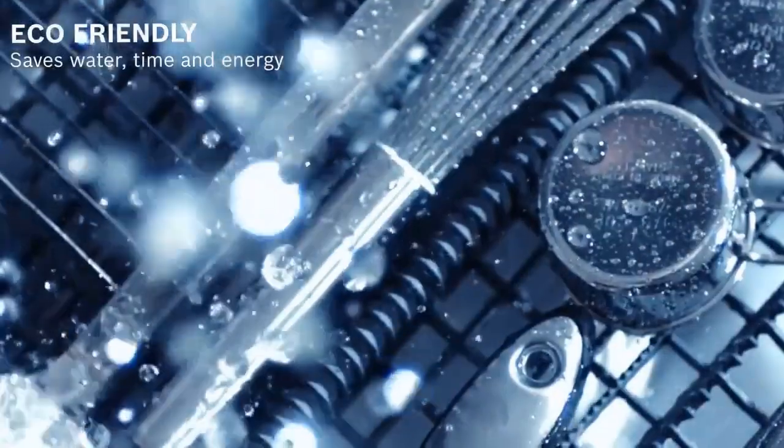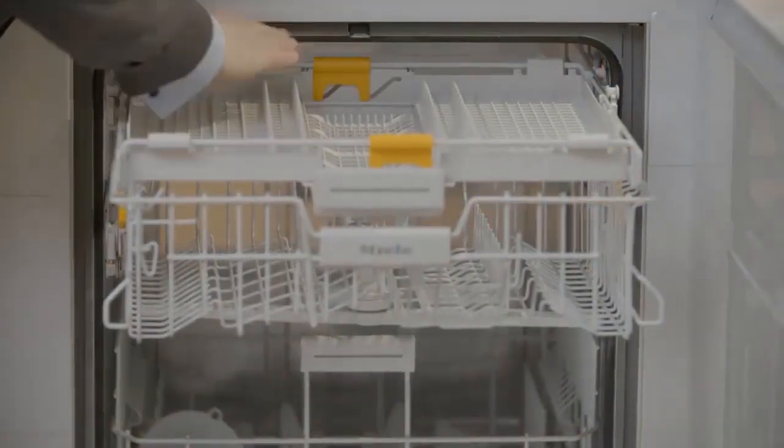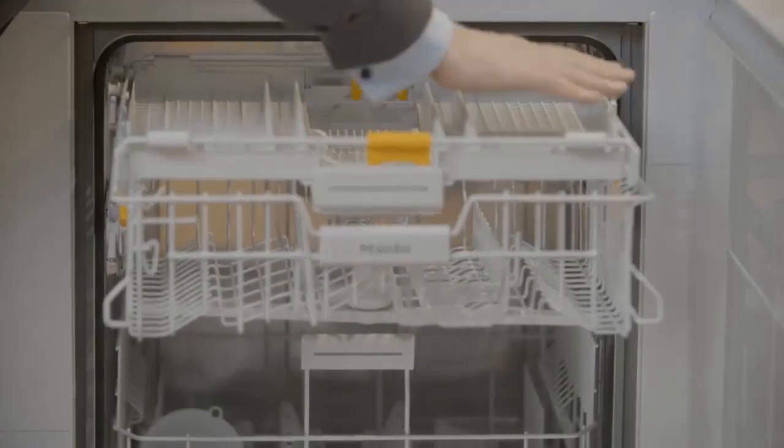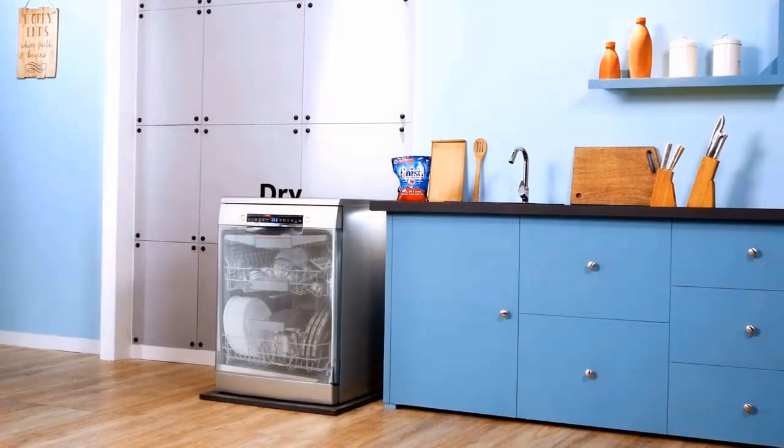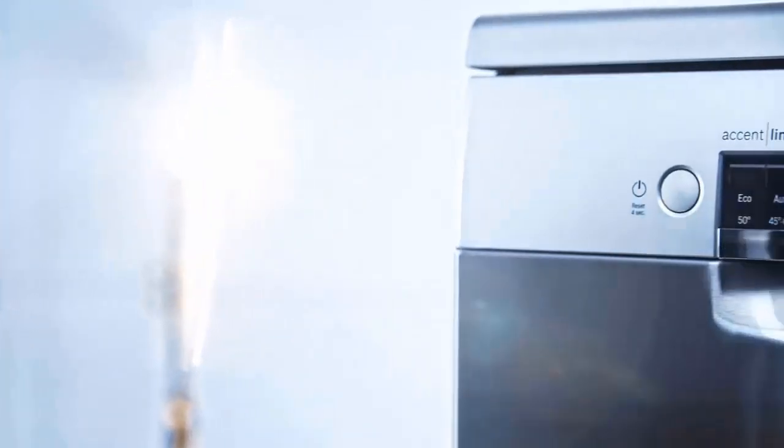Number six: Start your dishwasher late at night or early in the morning. Curious about this one, right? Many energy companies charge more during peak times when energy is consumed more often. To save money on bills, run your dishwasher early in the morning or late at night. For example, after dinner you can load dirty dishes, and in the morning then turn on the dishwasher.